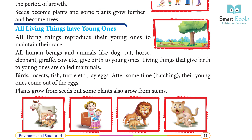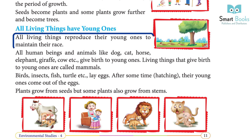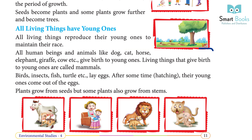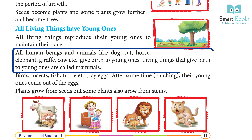All living things have young ones. All living things reproduce to maintain their race. All human beings and animals like dog, cat, horse, elephant, giraffe, and cow give birth to young ones. Living things that give birth to young ones are called mammals.